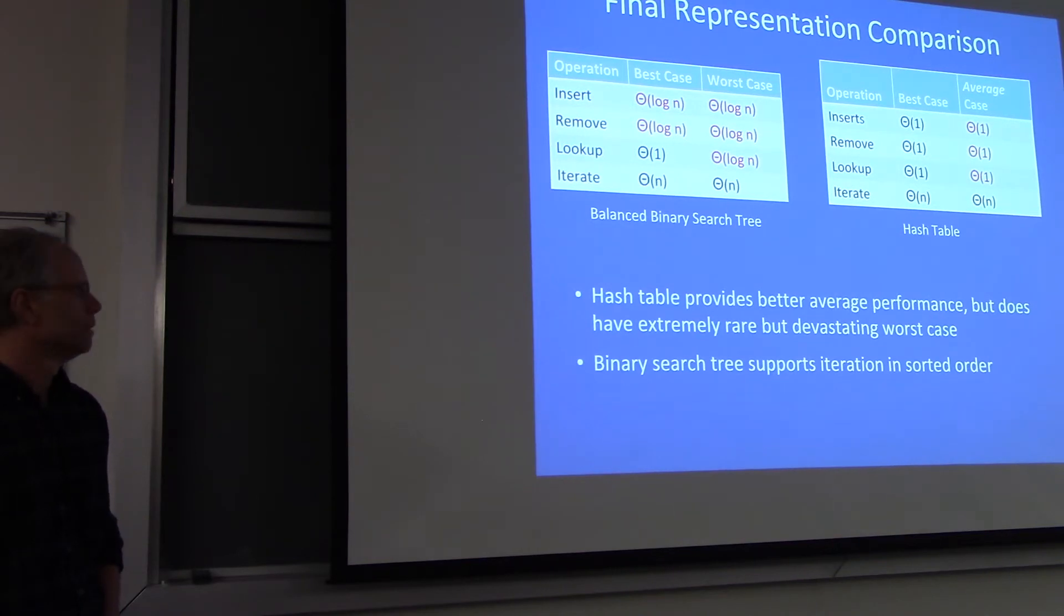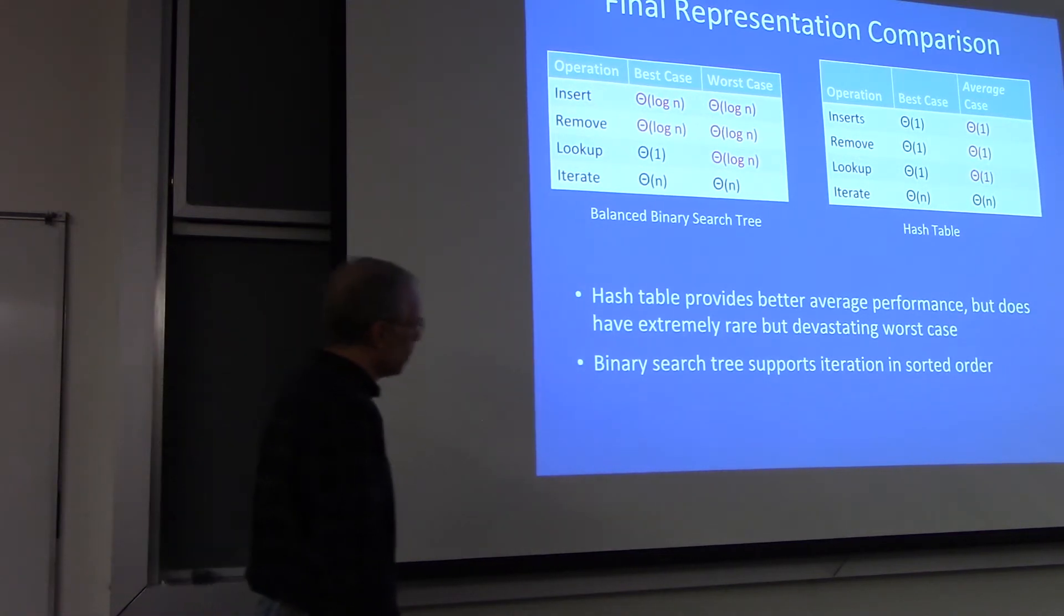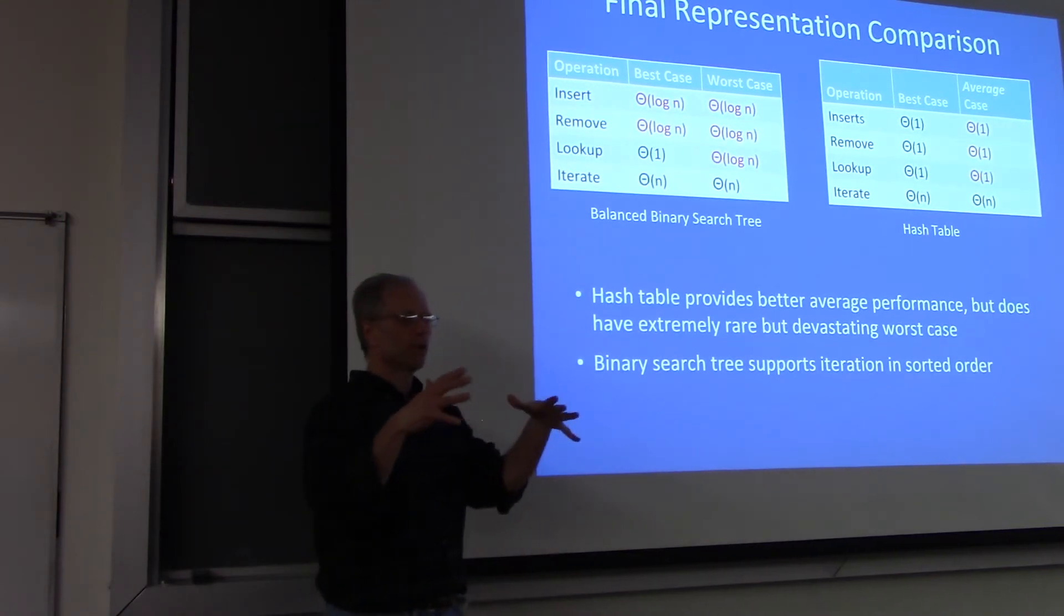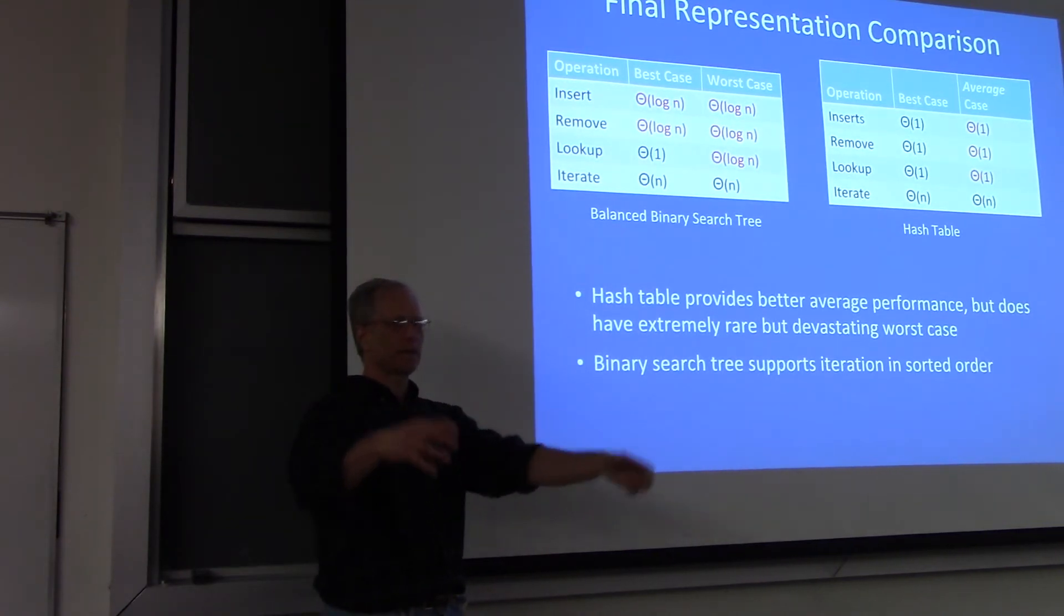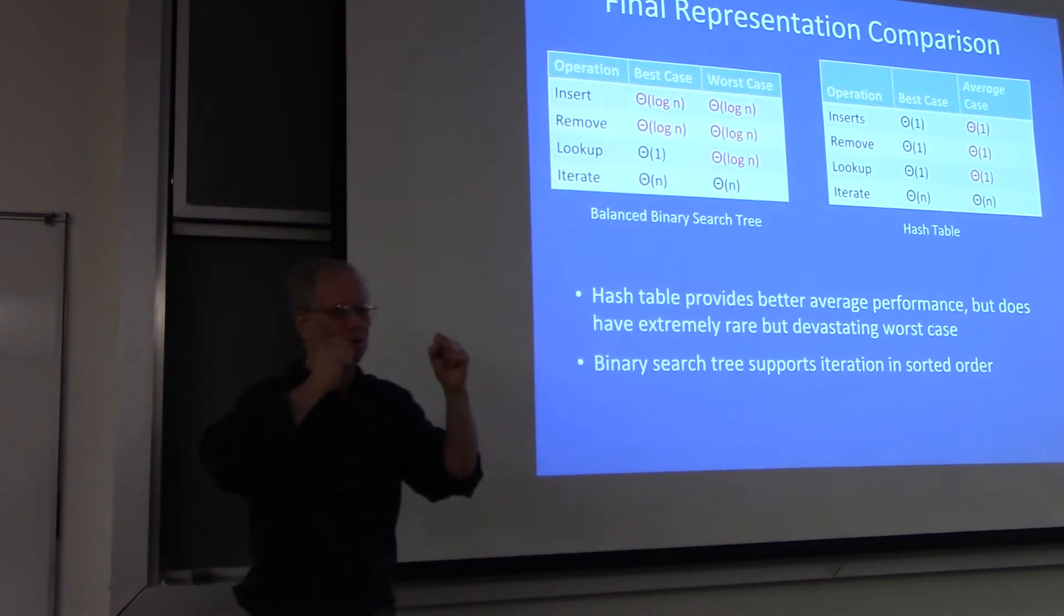It depends on how you want to organize your data, right? So if you want to have a tree representation of your data instead of just like a table. Well, okay, so he's saying it depends on how you want your data organized, but all I care about is I have a set abstraction. I don't care. Why do I care what's inside?